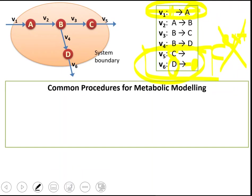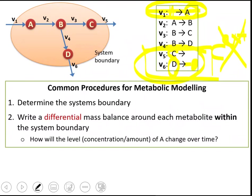The common procedures for metabolic modeling are: first, determine the system boundary, because based on this system boundary you will write the exchange reactions — the uptake and secretion reactions. The next step is to write a differential mass balance around each metabolite within the system boundary.